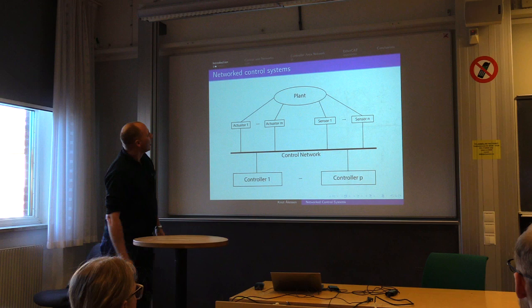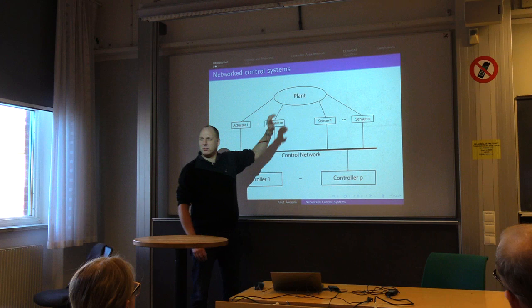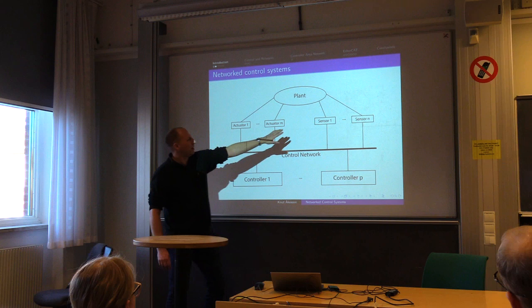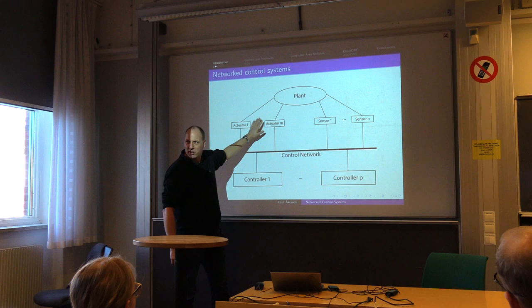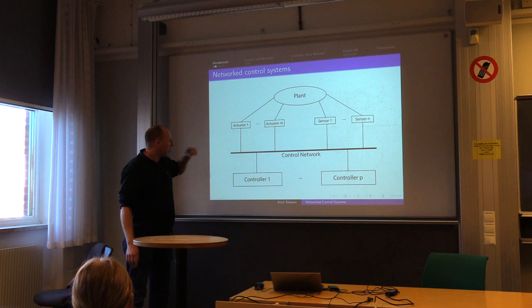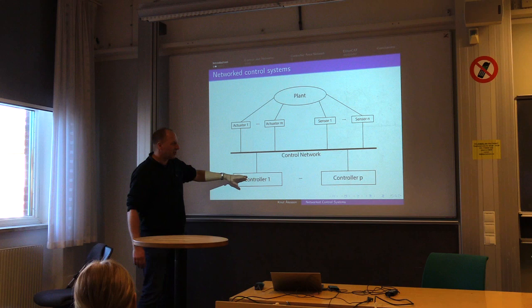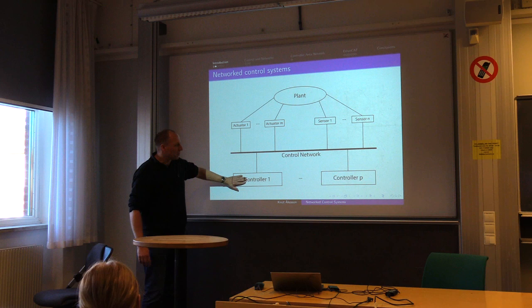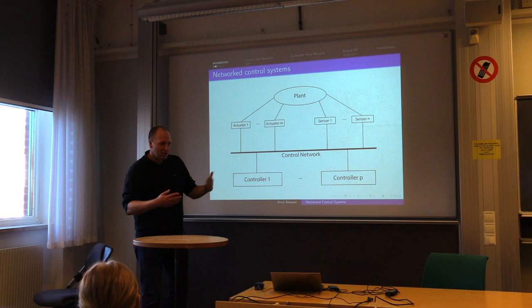If we look at the network structure, it can look a little bit like this. You have some plant that you want to control — it can be a car or a factory. You have a lot of sensors connected to that plant, and you have actuators, for example motors. Then you have some networks — one or many — and different controllers doing the sensing, deciding on control actions, and sending new control signals to the actuators to change the behavior of the plant.